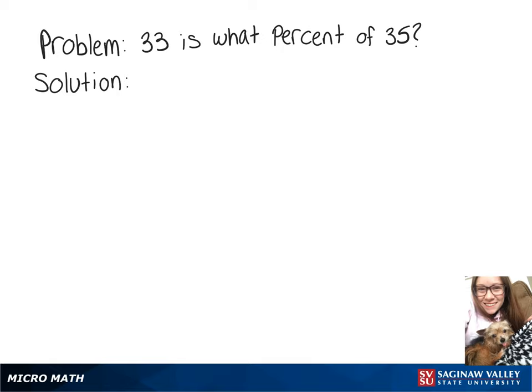We're going to solve the problem: 33 is what percent of 35? So we know that 'is' means equals, so we'll have 33 equals. 'What' implies x, 'of' means multiplication, and then we have a 35 there.